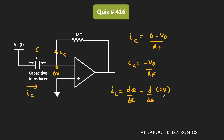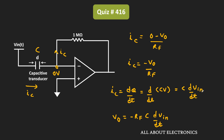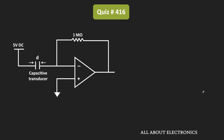So we can say that Ic equals d(CV)/dt. And if the capacitor is not changing with time, then Ic equals C times dV/dt. That means in that standard circuit, the output voltage Vout equals minus Rf times C times dV/dt, because the input voltage is the function of time. But if you observe the given circuit, here the input voltage is a fixed value, while the capacitance is changing with time.